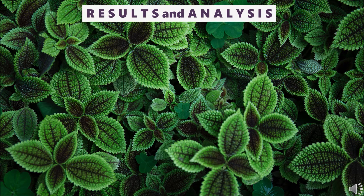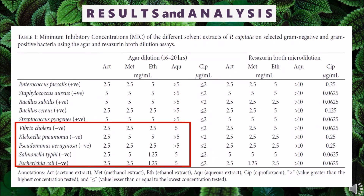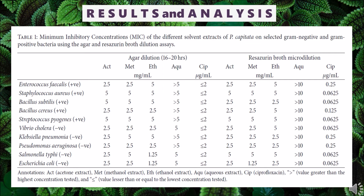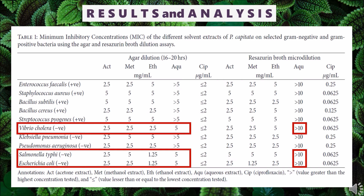For the results: gram-negative bacteria were found to be more resistant and susceptible to the crude extracts in the agar dilution method after 16 to 20 hours of incubation. The lowest activity was found for aqueous extracts compared to the organic solvent extracts. However, the resazurin broth microdilution technique proved to be more sensitive than the agar dilution method. This was evidently observed in the aqueous extracts tested on V. cholera, S. typhi, and E. coli.